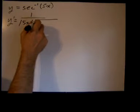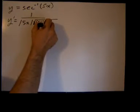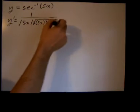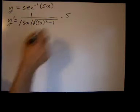times the square root of the argument squared, so 5x squared minus 1. You could pretty much leave it like that. Oh, sorry. Times the derivative of the argument, which is the derivative of 5x is 5.